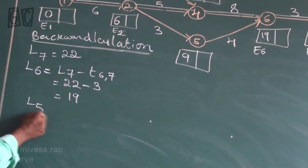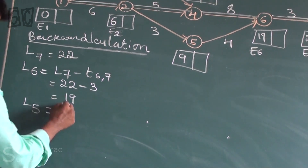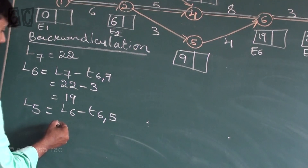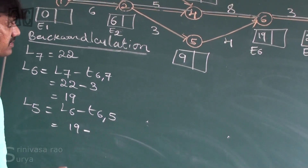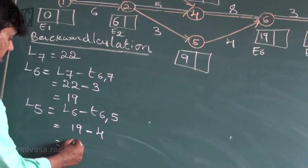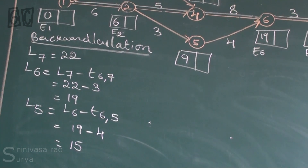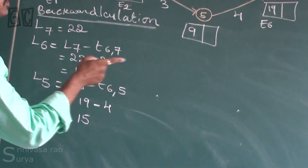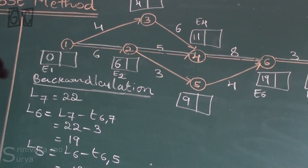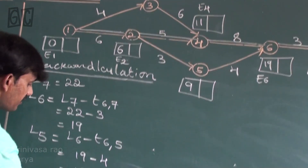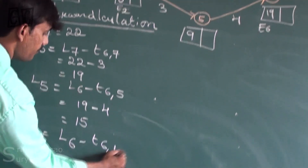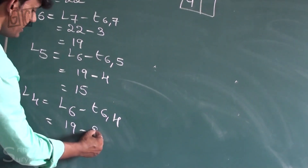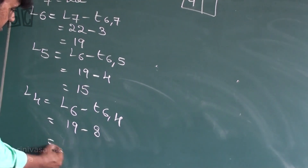Now L5: L5 is inching towards L6 minus time taken from 5 to 6, that is 19 minus 4, giving L5 equal to 15. Now L4: L4 is inching towards L6 minus time taken from 4 to 6, that is 19 minus 8, giving L4 equal to 11.